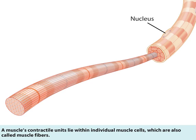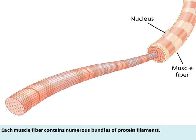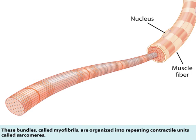A muscle's contractile units lie within individual muscle cells, which are also called muscle fibers. Each muscle fiber contains numerous bundles of protein filaments. These bundles, called myofibrils, are organized into repeating contractile units called sarcomeres.